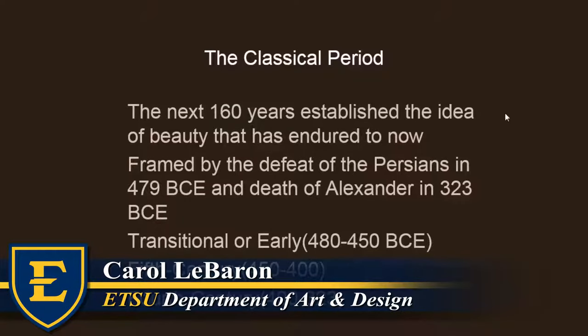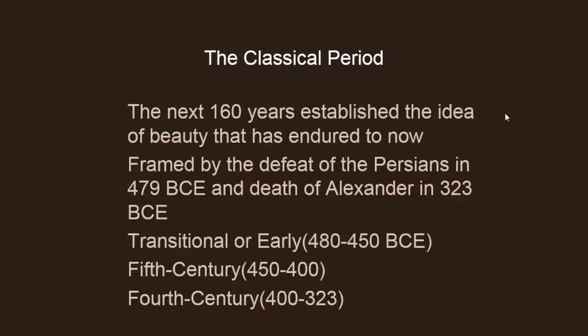Now we're going to move into the Classical period. The next 160 years really established the idea of beauty that has endured to now, and even today the trajectory of Western art harkens back to the Greeks. This period is framed by the defeat of the Persians in 479 BCE and ends with the death of Alexander in 323. Transitional or early classical is 480 to 450, then 5th century from 450 to 400, and 4th century classical is 400 to 323.